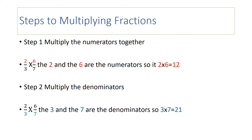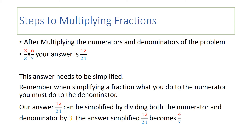Step two: multiply the denominators. Again, in the problem two-thirds times six-sevenths, the three and the seven are denominators. So three times seven equals twenty-one. After multiplying the numerators and denominators of the problem two-thirds times six-sevenths, your answer is twelve-twenty-firsts.